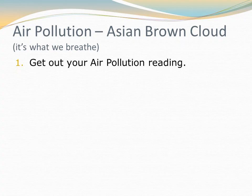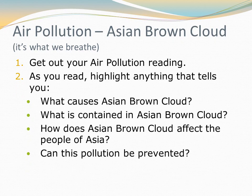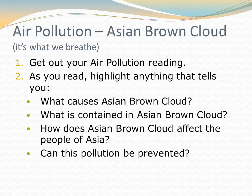Go ahead and get out your air pollution reading, along with a pencil and a highlighter. As we read, look for anything that might answer these questions: What causes Asian Brown Cloud? What is contained in it — what's making it brown? How does Asian Brown Cloud affect the people of Asia? And can this pollution be prevented? Look for all those things and highlight or underline them.